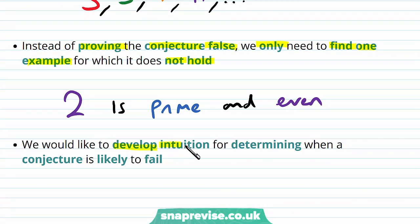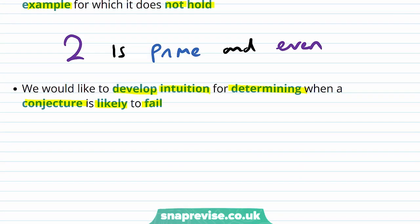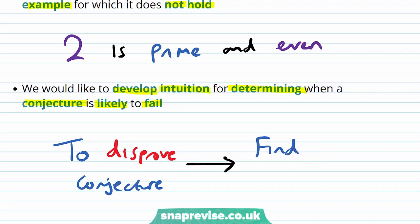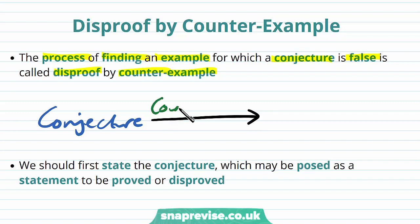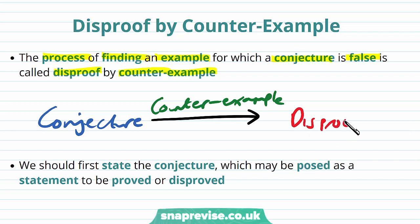We would like to develop intuition for determining when a conjecture is likely to fail. This is because a method of disproving a conjecture is to find an example when it fails. The process of finding an example for which a conjecture is false is called disproof by counterexample. We take a conjecture and provide a counterexample which goes against the conjecture, giving us a disproof — i.e. our conjecture is certainly false.